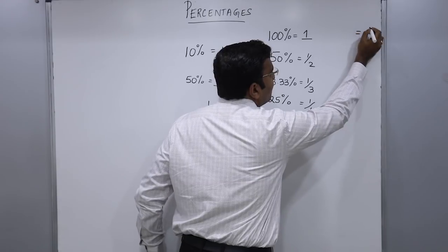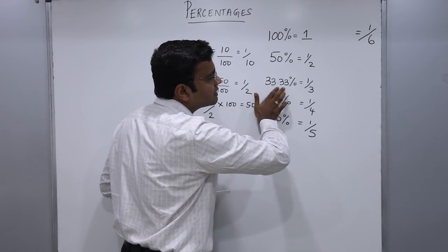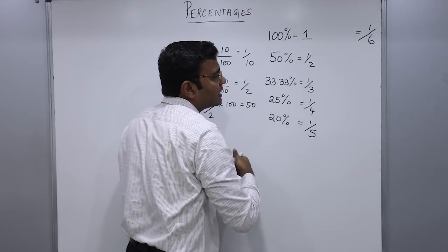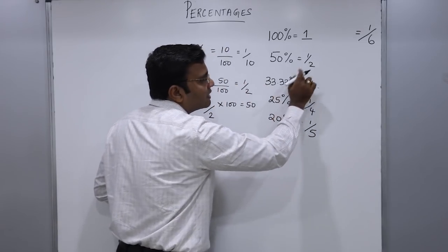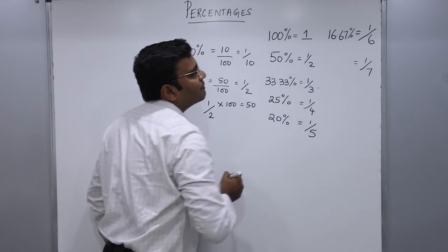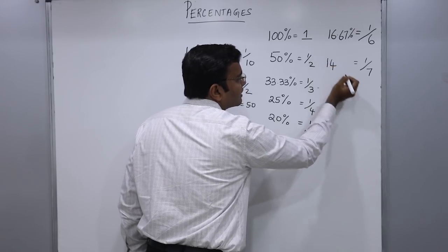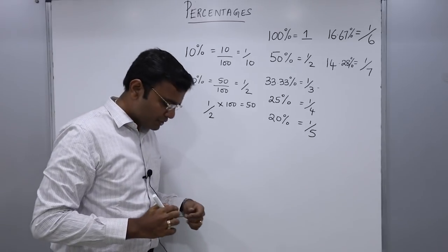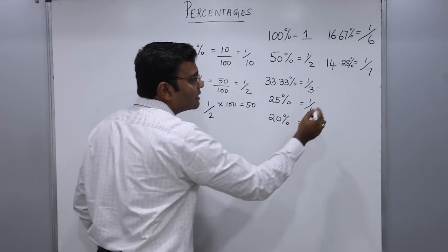What is 1 by 6? Since 33.33 percent is 1 by 3, dividing both sides by 2 gives 16.67 percent equals 1 by 6. For 1 by 7, the trick is: 7 times 2 is 14, and 14 times 2 is 28 — so 1 by 7 is 14.28 percent. For 1 by 8: since 1 by 4 is 25 percent, dividing by 2 gives 12.5 percent equals 1 by 8.